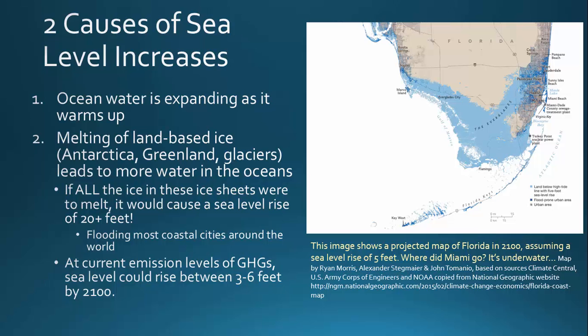The first cause is that as water warms up, it expands and takes up more volume. As our oceans warm along with the atmosphere, that causes the water to expand and the sea levels to creep up from that expansion.